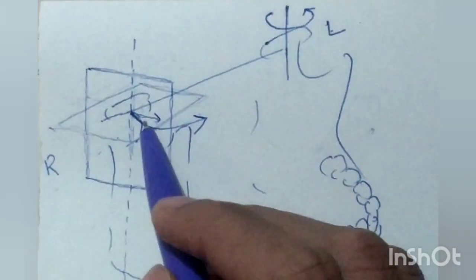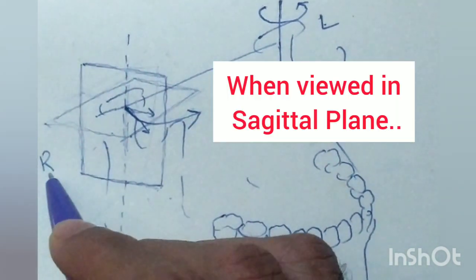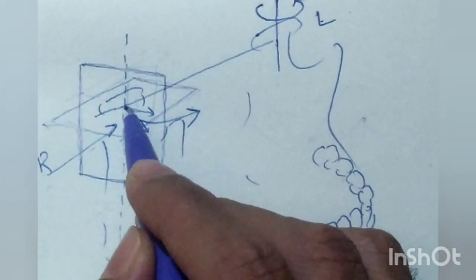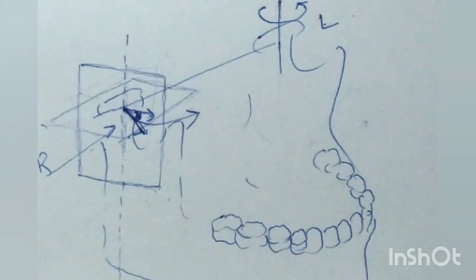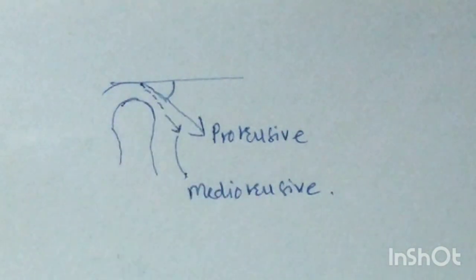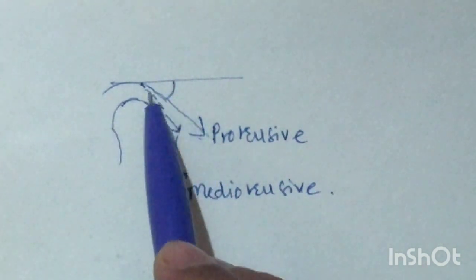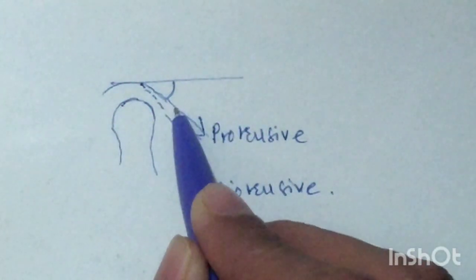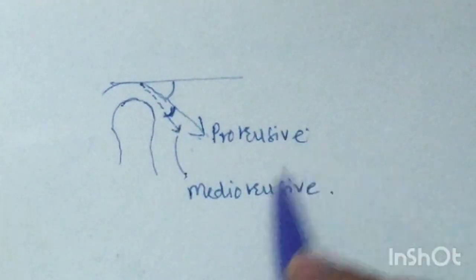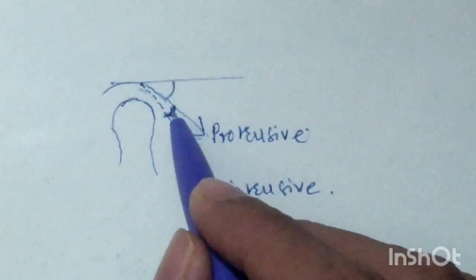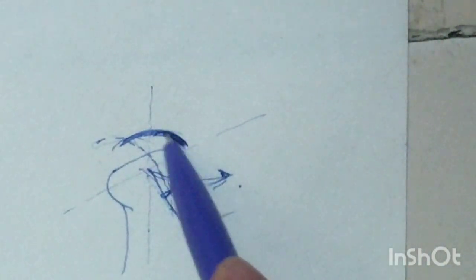In a three-dimensional view, Fisher's angle is the angle seen in the sagittal plane — the angle formed by the mediotrusive path and the protrusive path. When viewed from the sagittal direction, the condyle follows the protrusive path and also moves inward along the mediotrusive path. The angle formed between these two paths is called Fisher's angle, and it determines the medial slope of the condylar fossa.